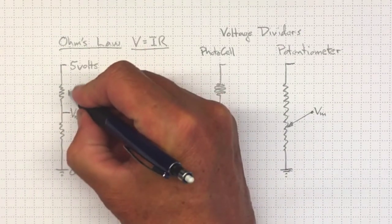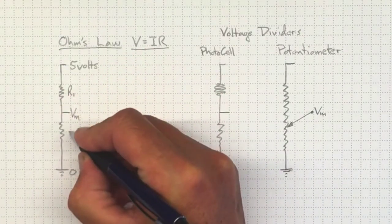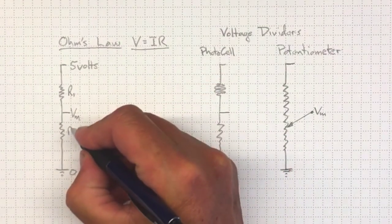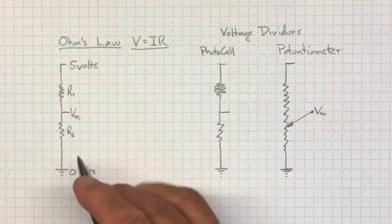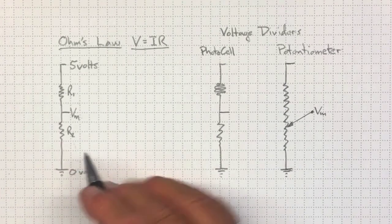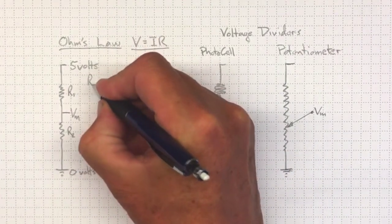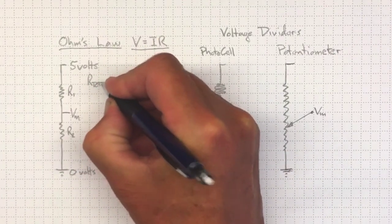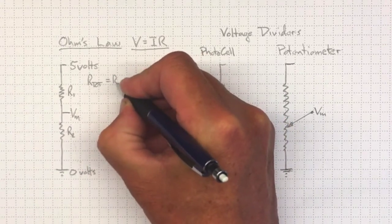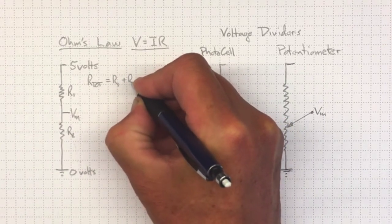So let's call this resistance R1, some number of ohms, we don't know what it is right now, and R2, but they're both fixed values. The total resistance will be the sum of the two, R1 plus R2.